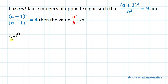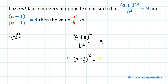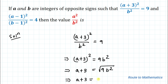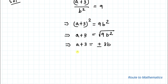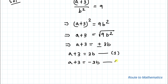Without any delay, let's start the solution. Our first ratio is (a+3)² / b² = 9. From this we can write (a+3)² = 9b², which implies a+3 = ±3b. So we get two equations: equation 1: a+3 = 3b, and equation 2: a+3 = −3b.